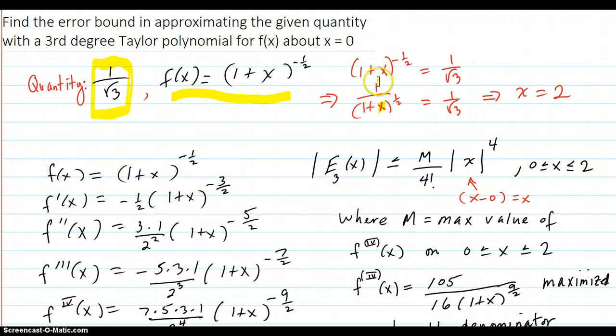2 goes down there if you expect this to be 1 over square root of 3. So that's the 2. That's where we're evaluating the function at to get this quantity.